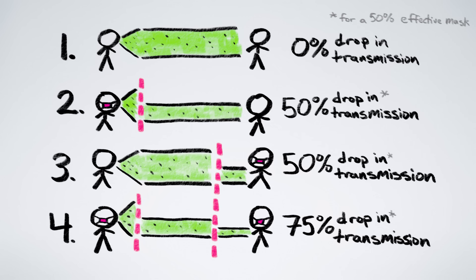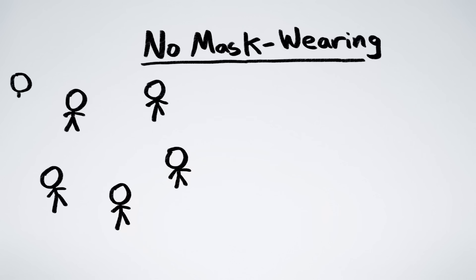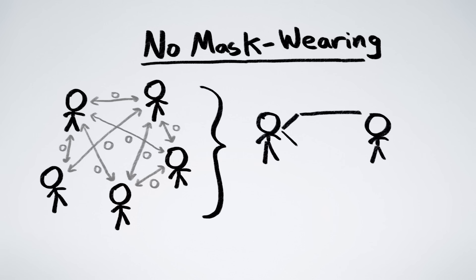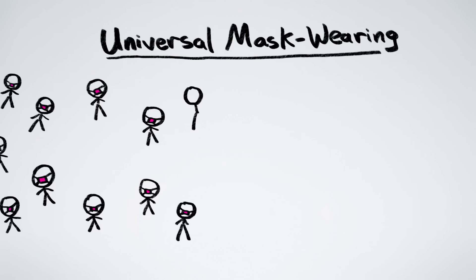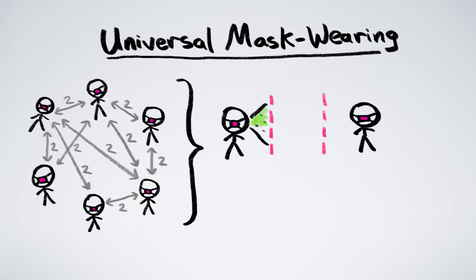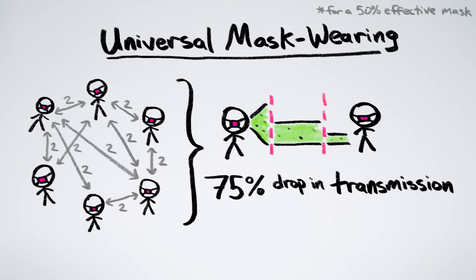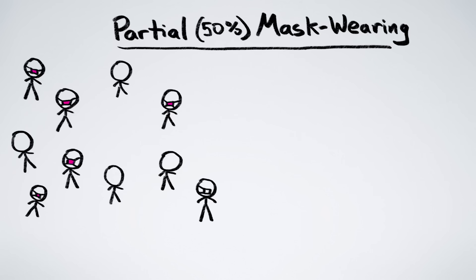What does this mean for society overall? Well, it depends on what fraction of people wear masks. As we've seen, if no one wears masks, then no interactions involve any masks, and the overall drop in disease transmission is 0%. And if 100% of people wear masks, then all interactions involve two masks, and the overall drop in disease transmission is 75%.